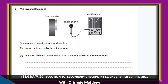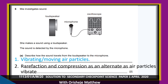Question 6 investigates sound. There is a loudspeaker as the source of sound, a microphone to detect the sound, and an oscilloscope that shows the sound wave. Describe how sound travels from the loudspeaker to the microphone: particle vibration, moving air particles, rarefaction and compression alternating as air particles vibrate.